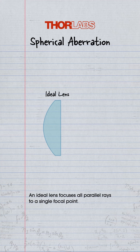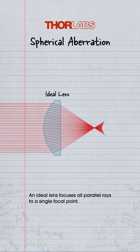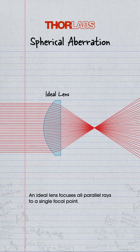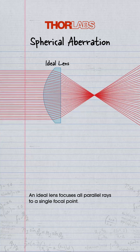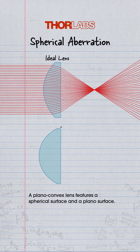An ideal lens focuses all parallel rays to a single focal point. A plano-convex lens features a spherical surface and a plano surface.